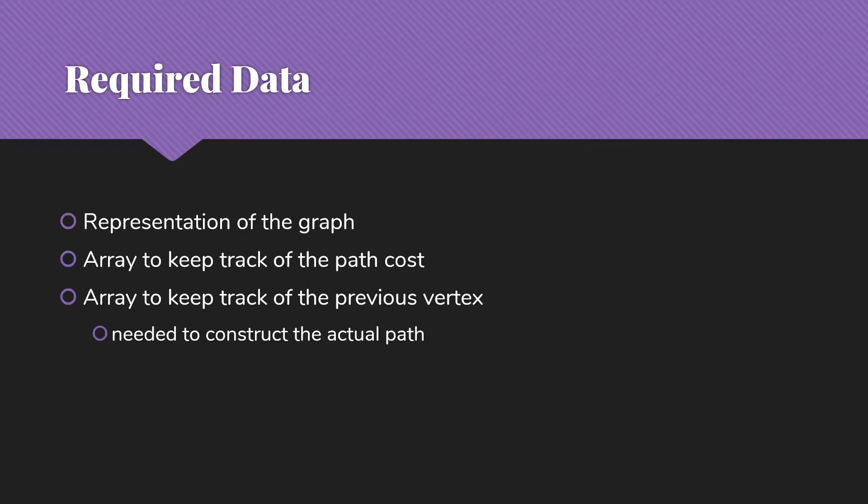This is going to require data very similar to the data we needed for our unweighted situation. We're going to need our representation of the graph, an array to keep track of the path cost, the array to keep track of the previous vertex, because we're going to construct the actual path in exactly the same way that we do for our unweighted situation.